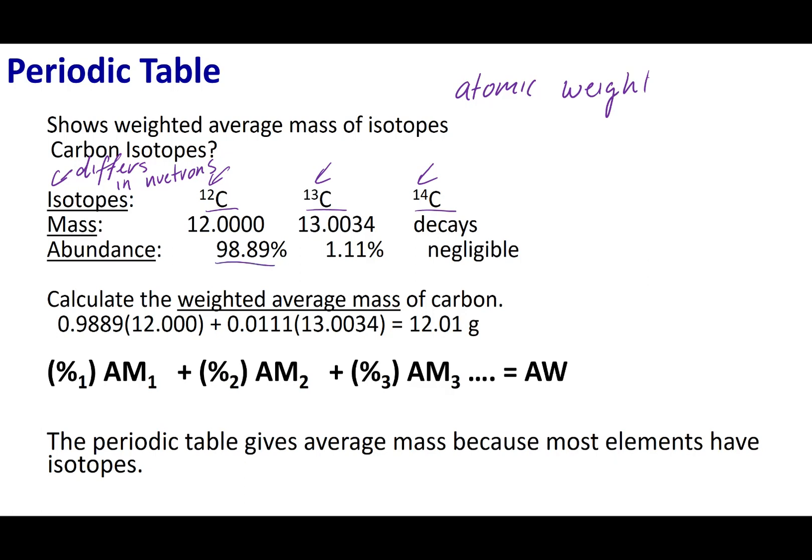It turns out that 98.89% of carbon around Earth is going to be carbon-12. About 1% is carbon-13, and carbon-14 isn't terribly stable, so you're not going to find too much inside a normal sample. And for now we're going to call this a negligible amount. Carbon-12 is going to weigh about 12 AMU, and carbon-13 is about 13.0034 AMU.